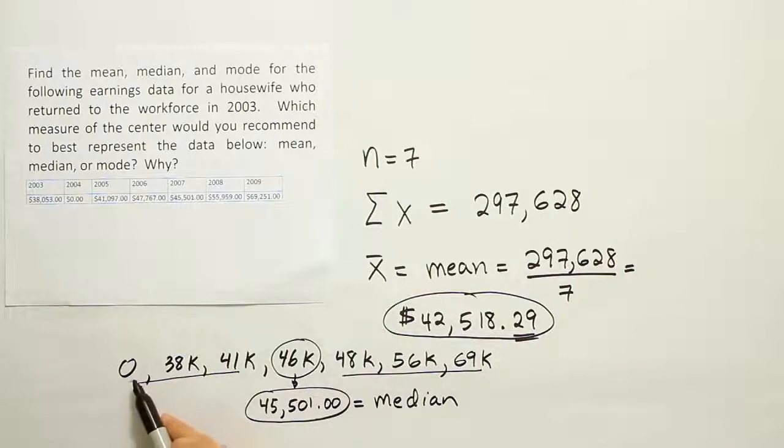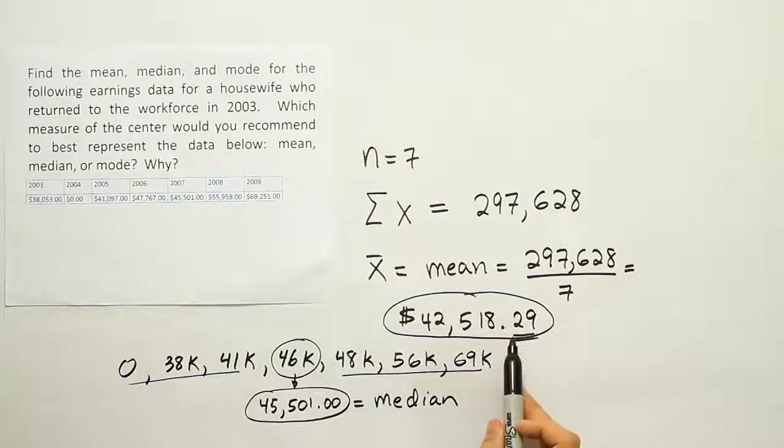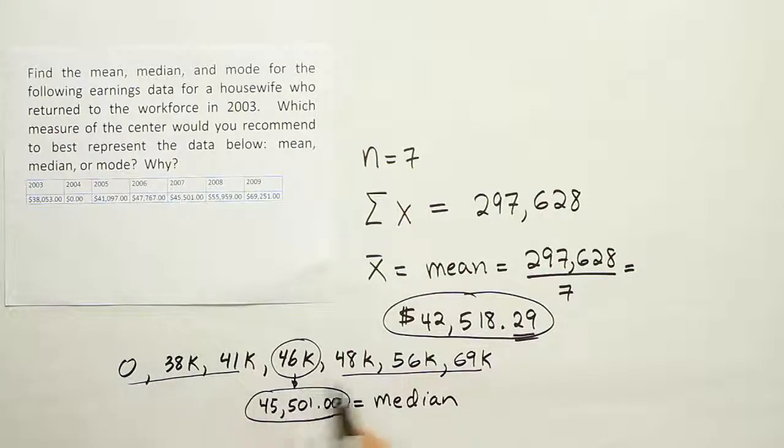The other years after that she worked, she never really made less than around 40K - 38K is a little below. But when you have this zero in the list of numbers, that's going to create an effect that lowers the average. In general, with salary data or home value data, it would be highly affected by extreme values.